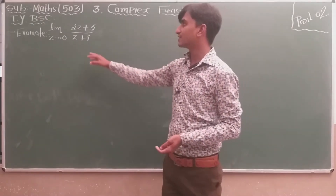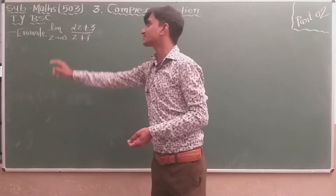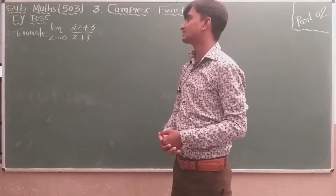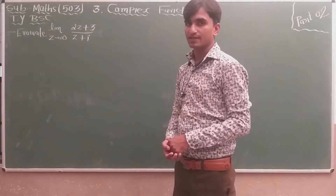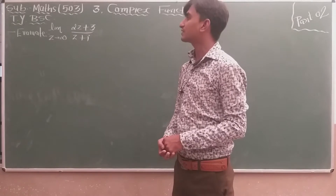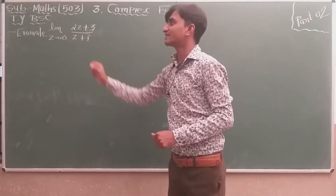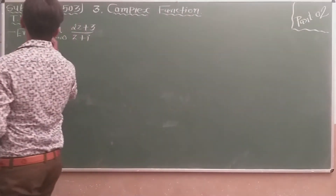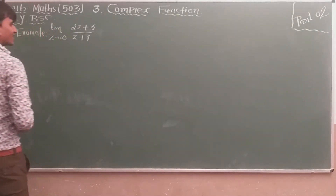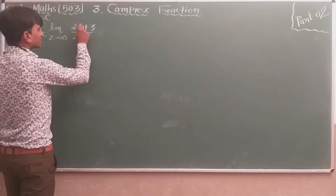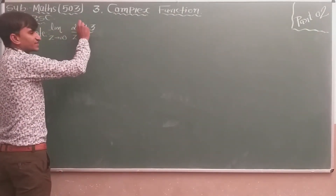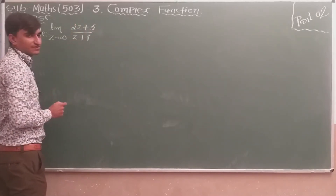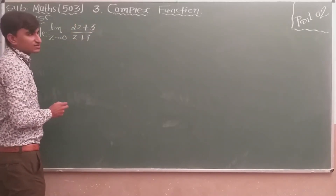So here, evaluate limit z tends to infinity of (2z + 3) / (z + i). The limit is given as z tends to infinity, and if we put z = infinity directly, we get the infinity/infinity form.